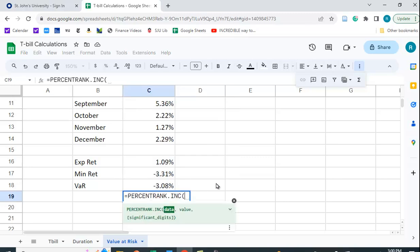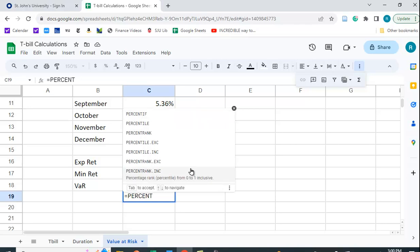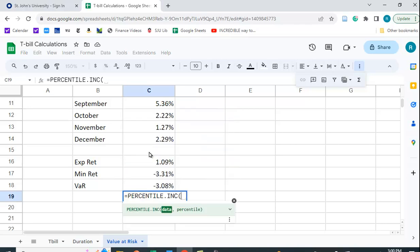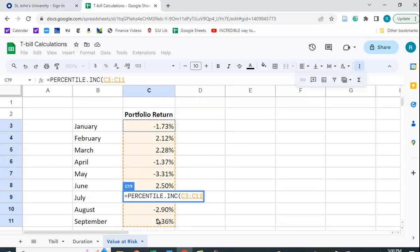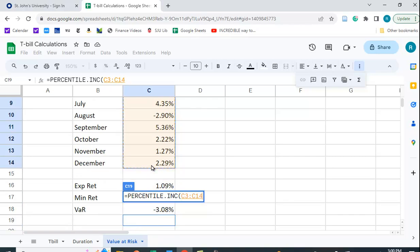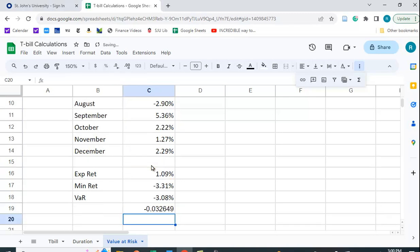Again, we'll use percentile.inc. I'm going to highlight the data and put in 0.01. We get negative 3.26%. So we feel 99% certain that we're not going to lose more than minus 3.26%.